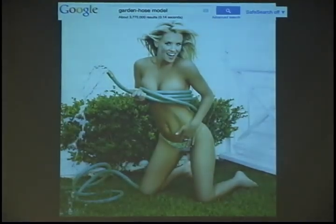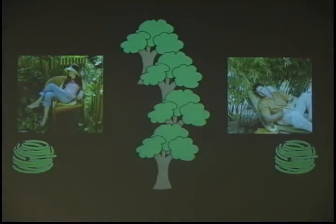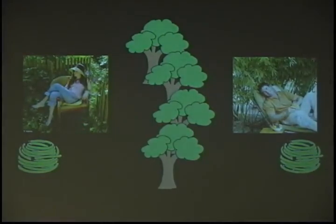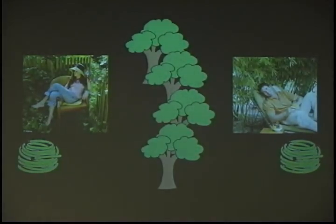I don't mean these kind of models that you get when you search for images for garden hose model and turn safe search off. But what I mean is the following. So we have Alice and Bob, they're chilling out in their gardens. They're neighbors, and their gardens are separated by an alley of trees, so they can see each other. And of course, as good gardeners, they're both well-equipped — they have a nice pile of garden hose available to them.